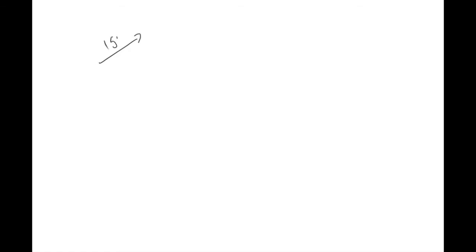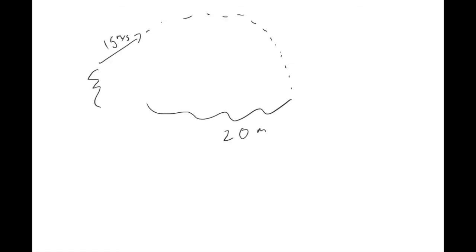Another example: say you are launching a projectile at an initial velocity of 15 meters per second, and you wanted to hit some target that was 20 meters away from you, where the height you were above your target was 2.4 meters. We want to know at what angle you would need to launch this such that you hit that target 20 meters away.